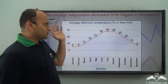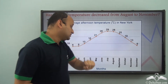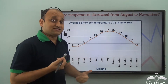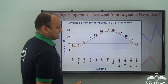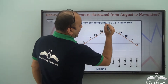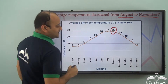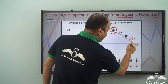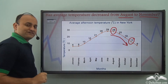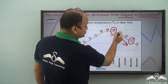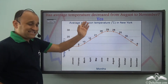Now that you understand how to interpret this data, can you answer: has average temperature decreased from August to November? Well, definitely it is yes. You have to compare August to November. This is the data for August and this is the data for November. We see a downward trend, so temperature is actually decreasing. Has average temperature decreased from August to November? Yes, it has.